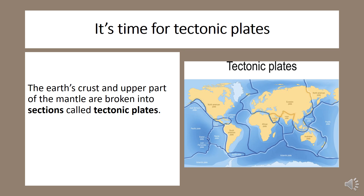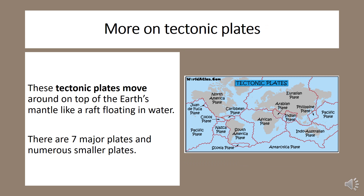Now the Earth's crust and the upper part of the mantle are broken into sections called tectonic plates. These plates move around on top of the Earth's mantle like a raft floating in water. There are seven major plates and numerous smaller plates.